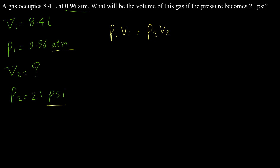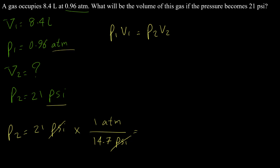I will convert p2 from psi to atm. p2 = 21 psi × (1 atm / 14.7 psi), which equals approximately 1.4 atm. Now both pressures are in atm and we can apply Boyle's Law.